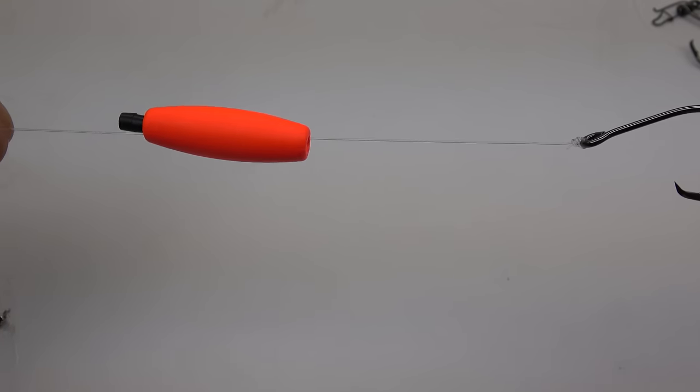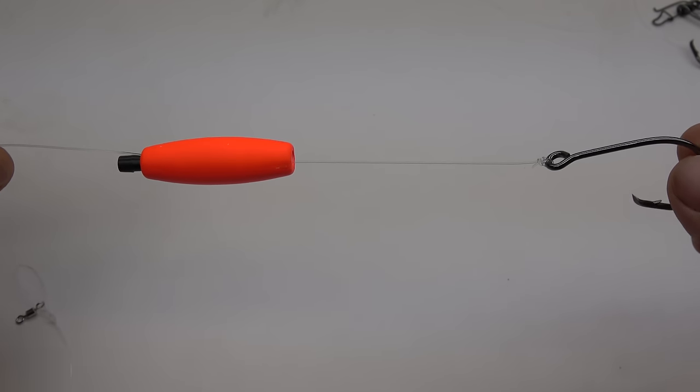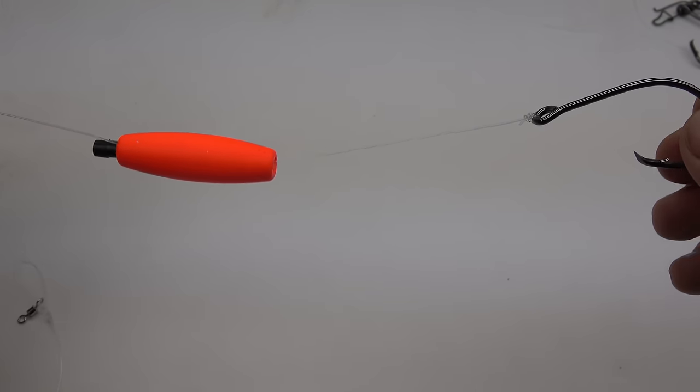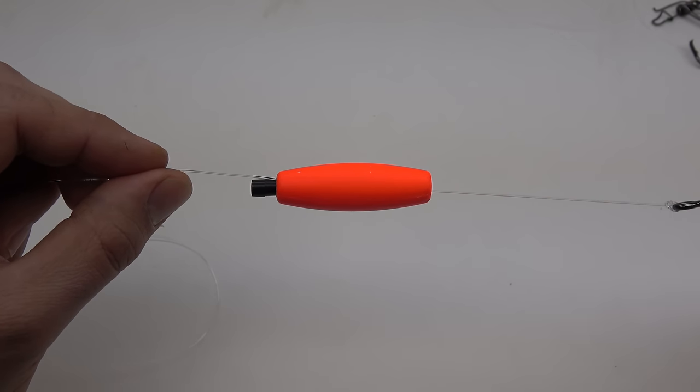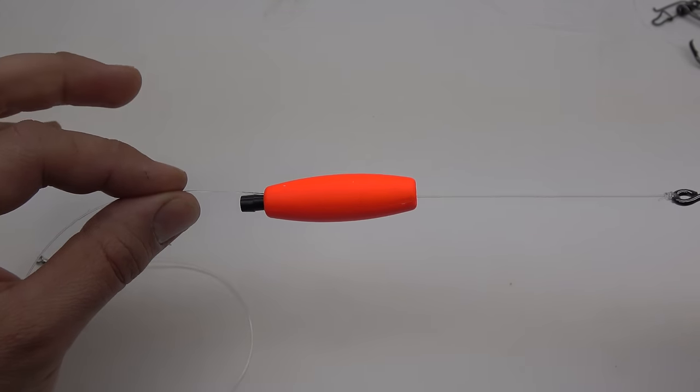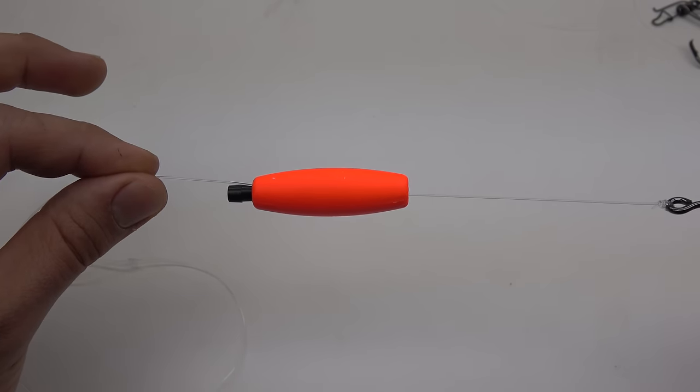It also uses a peg float to suspend your bait off the bottom. This is the key to the Santee Cooper Rig. This peg float you see here suspends the bait off the bottom. That's the main premise of the Santee Cooper Rig.